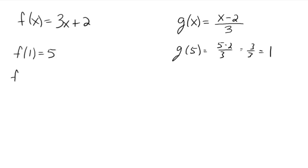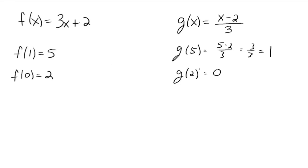If that happens every time — say f of 0 gives you 2, and you take that y value, g of 2, and you get 2 minus 2, which is 0 over 3, which is 0 — you get the x value back. If that happens every single time between the two functions, then the two functions are what are called inverses of each other.